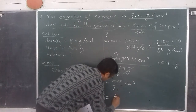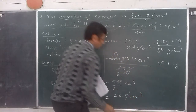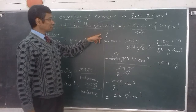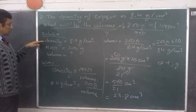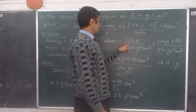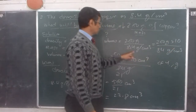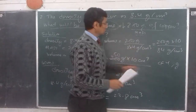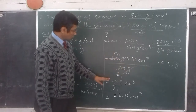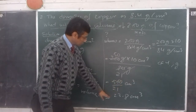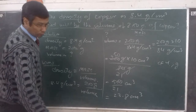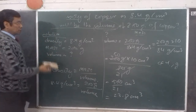After long division, the volume is 23.8 centimeter cube. So the density of copper is 8.4 gram per centimeter cube, mass is 200 grams, using the formula density equals mass upon volume, cross multiplying, writing 8.4 as 84 by 10, rearranging, using common factors 4 and grams to reduce to 500 by 21 centimeter cube, and doing long division gives 23.8 centimeter cube. Pause the video and copy this.